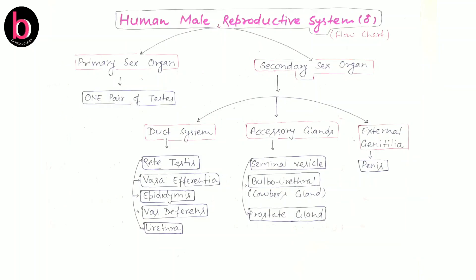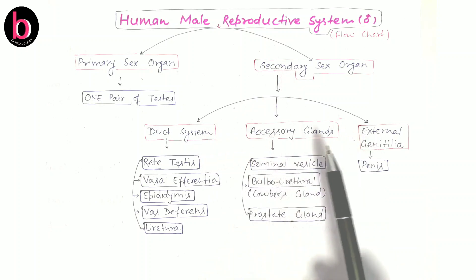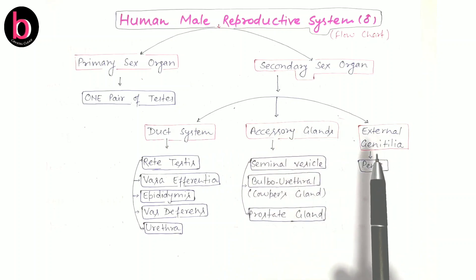Hello friends, in this video lecture we will discuss about secondary sex organs of the human male reproductive system. In the previous video, part 1, we discussed about the primary sex organ — a pair of testes — and other diagrammatic structures. In secondary sex organs, there are 3 sub-structures: duct system, accessory gland, and external genitalia.